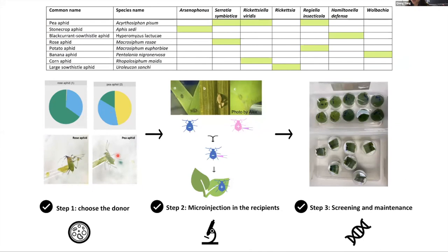In much the same way as endosymbiont bacteria block dengue transmission, they may also block the transmission of plant viruses spread by aphids. Because of this, manipulations and deliberate releases can lead to displacement of local populations by strains that carry endosymbionts with desirable attributes like reduced virus transmission capacity, increased pesticide susceptibility, and increased susceptibility to natural enemies. So if successful, this research program has the potential to provide a different approach to pest management that could improve the long-term profitability of farming practices from both an environmental and business perspective.